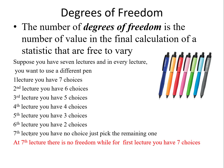At the seventh lecture, there is no freedom because we have no choice — we have only one pen available. So for the first six lectures you have some choices, but for the seventh you have no choice. What will be the degree of freedom in this scenario? N equals seven, so the degree of freedom is N minus 1, which is seven minus 1 equals six. We have freedom for six choices but not for the seventh.